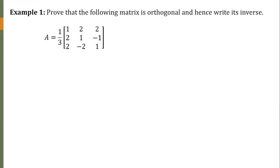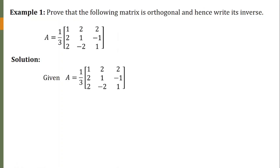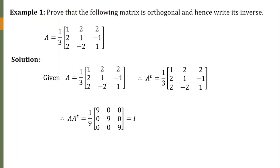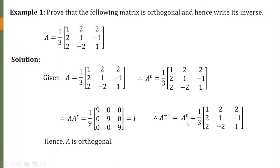Now we see examples on these matrices. The first question is: prove that the following matrix is orthogonal and hence write its inverse. The given matrix A is a 3×3 matrix. First, let us find its transpose — A-transpose is obtained by exchanging rows with columns, so the first row becomes the first column, second row becomes second column, and third row becomes third column. Now we multiply A and A-transpose, and we find that A times A-transpose equals 1/9 times a diagonal matrix with all diagonal entries equal to 9. Dividing 9 by 9 gives the identity matrix I. Therefore A is an orthogonal matrix, and clearly A-inverse equals A-transpose.